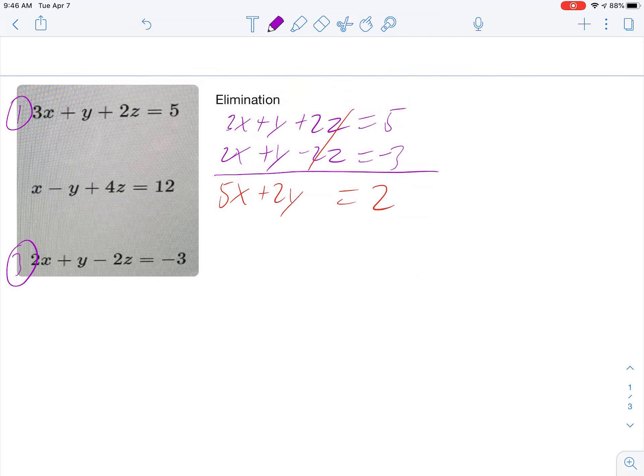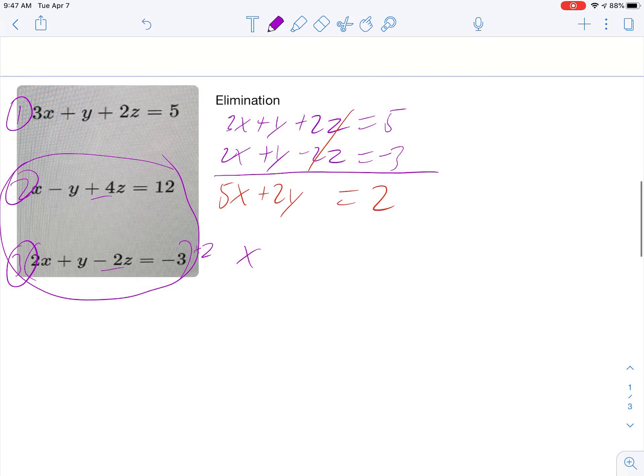Now we're going to pick a different pair of equations. So we have to use the second equation because you always need to use all three in some form or another. So let's just use the second and third equations. In order to do that, I'm going to have to change the z coefficient. So I want the z's to cancel out again because that's the variable that we decided to cancel. So I'm going to think about what do I need to multiply by to make the z's have the same coefficient. And clearly that's just a 2 on the third equation. So I'm going to multiply that entire equation by 2. So the first one is still just x minus y plus 4z equals 12. And then the third equation after multiplying by 2 is 4x plus 2y minus 4z equals negative 6.